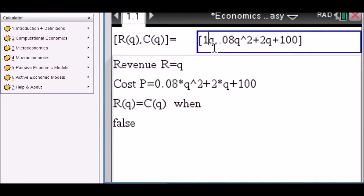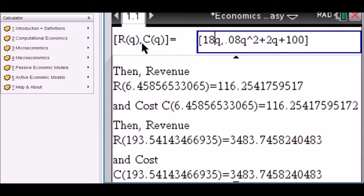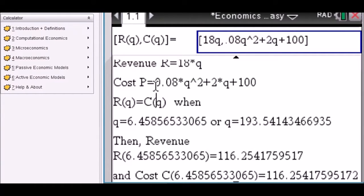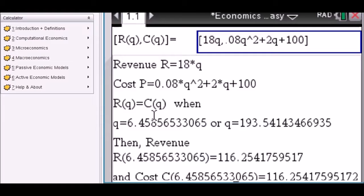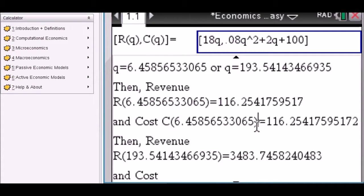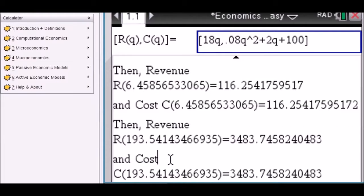Revenue Equal Cost. Enter your revenue and your cost equations here. Scroll up. And then you can see that they both match for these two quantities here. And then in those cases the revenues and the cost which of course match are being computed for you for each solution that is found.